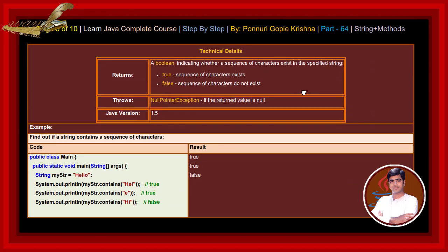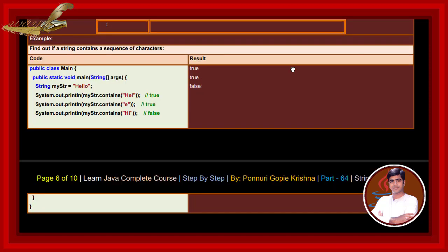Technical details: returns a boolean indicating whether a sequence of characters exists in the specified string — true if the sequence exists, false if it does not. Throws NullPointerException if the returned value is null. For example, finding out if a string contains a sequence of characters — if we write and execute this code, the output result returns true, true, false.